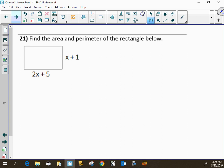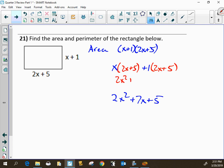For 21, find the area and perimeter. So I'll do area first. Area is length times width. So that's x plus 1 times 2x plus 5, which can be written out as 2x squared plus 7x plus 5. And I'll show a few more steps just so you can see where that comes from. That'll be 2x squared plus 5x plus 2x plus 5. And the middle two terms combine to do that.